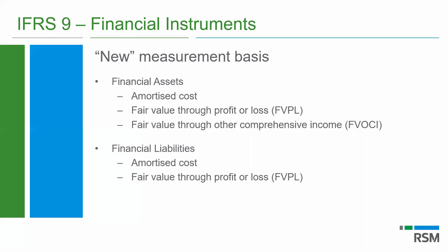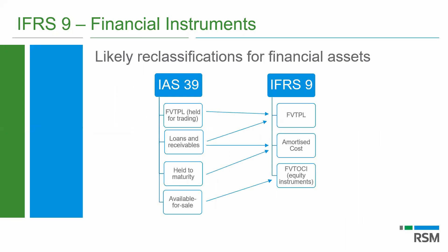Just some likely classifications when you are transitioning from IAS 39 to IFRS 9 for financial assets. On the left-hand side you have the IAS 39 classifications and on the right the IFRS 9 classifications. Your fair value through profit and loss — previously held-for-trading investments — would probably go to fair value through profit and loss. Loans and receivables could be either fair value through profit and loss or amortized cost. Held-to-maturity would probably be at amortized cost and available-for-sale equity instruments would go to fair value through OCI.